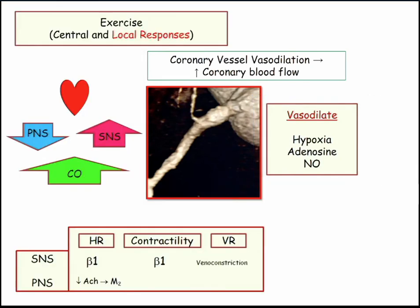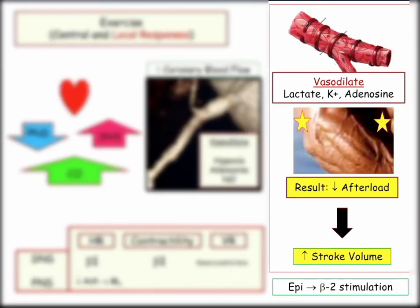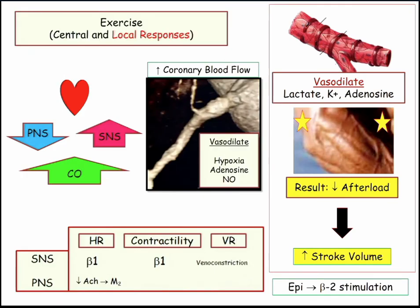The most important thing that helps me get my arms around keeping up with cardiac output is skeletal muscle. As a result of lactate production, hyperkalemia, and adenosine, the vessels in our skeletal muscles vasodilate. And when you vasodilate — just like we saw with septic shock — you decrease afterload.